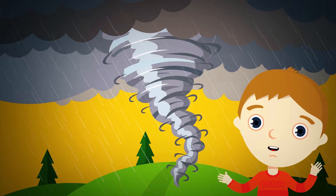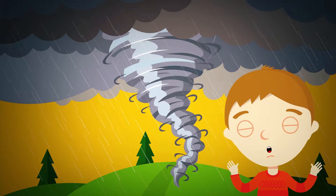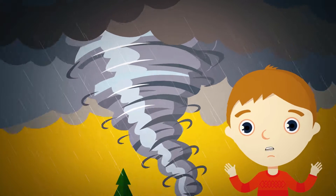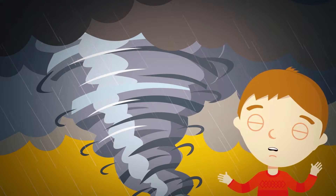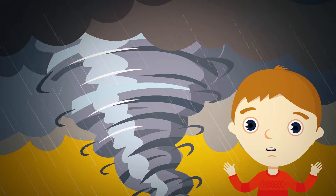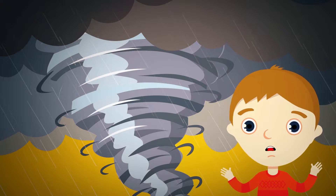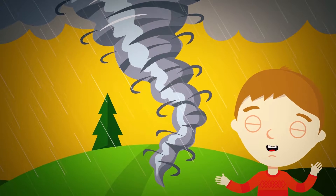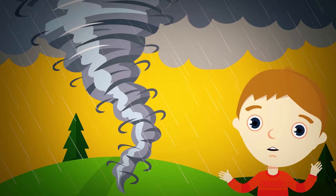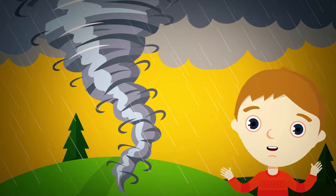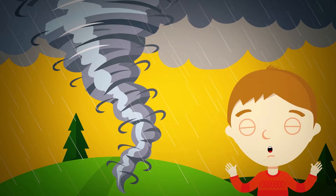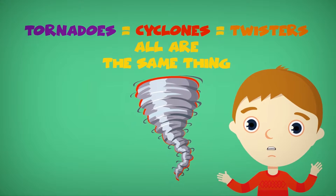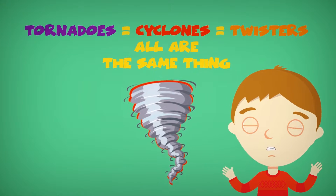A tornado is a rapidly spinning tube of air. It begins at the base of a thunderstorm and reaches down to the Earth's surface, touching both the ground and the cloud above. Tornadoes can also be called cyclones or twisters.